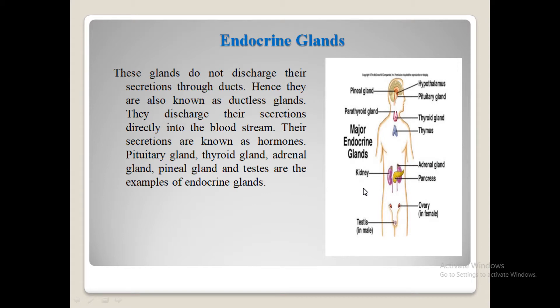The bloodstream carries the secretions to the target cells. Important endocrine glands include the pituitary gland, the thyroid gland, the adrenal gland, the pineal gland, testes, ovaries, and others. These make up your basic endocrine system.